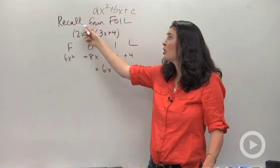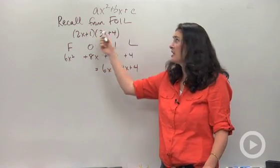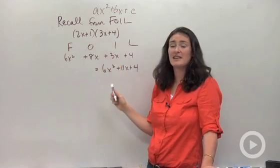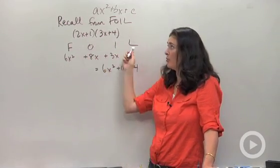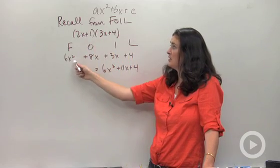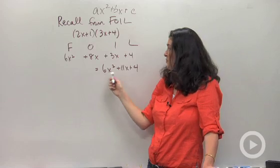What I wanted to do is show you guys something you already know before we look at this new stuff. You already know how to foil. If I were given these two binomials and asked to multiply them, I would be doing the foil process: firsts, outers, inners, and lasts, and then combine like terms.